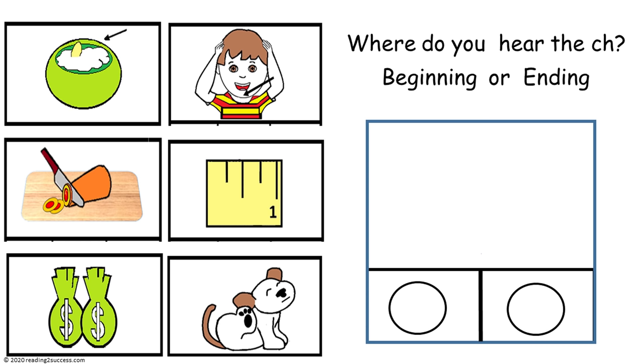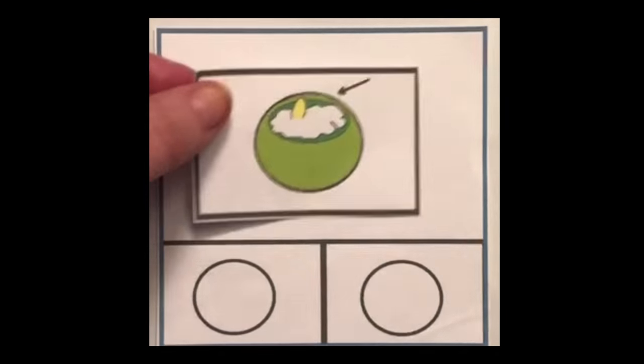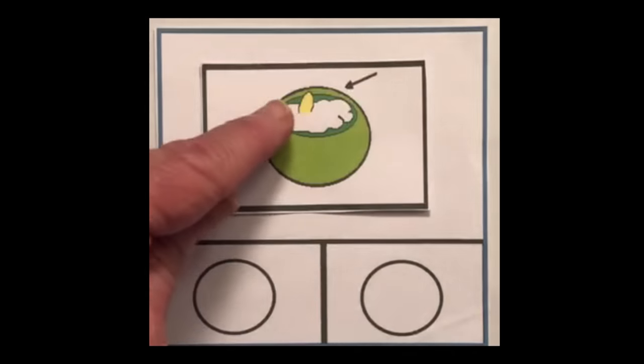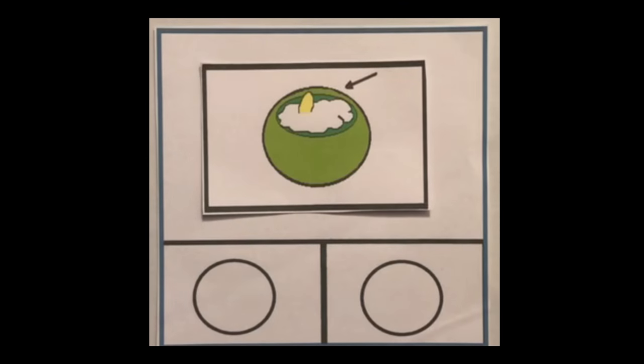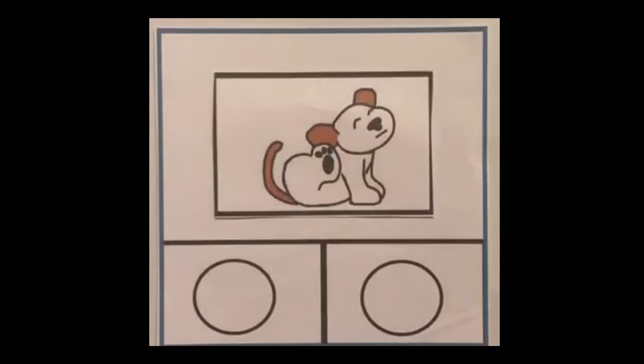This is the template for the first activity. This activity is called where do you hear the CH sound. Our first picture is of a potato chip, in the beginning. The next one is itch. The dog was scratching because he had an itch, the ending.